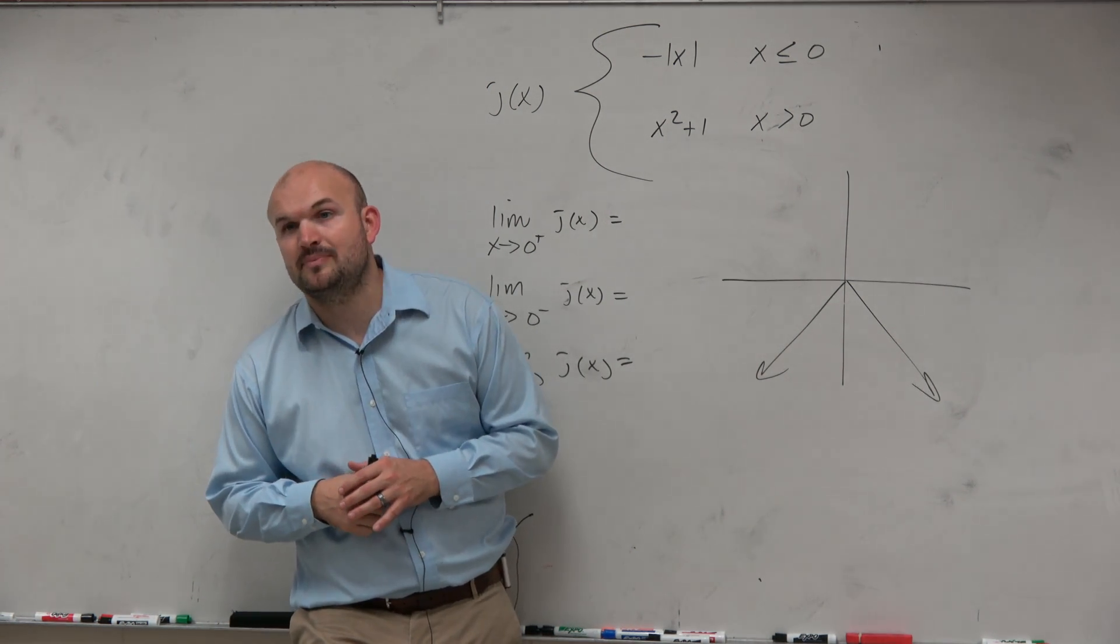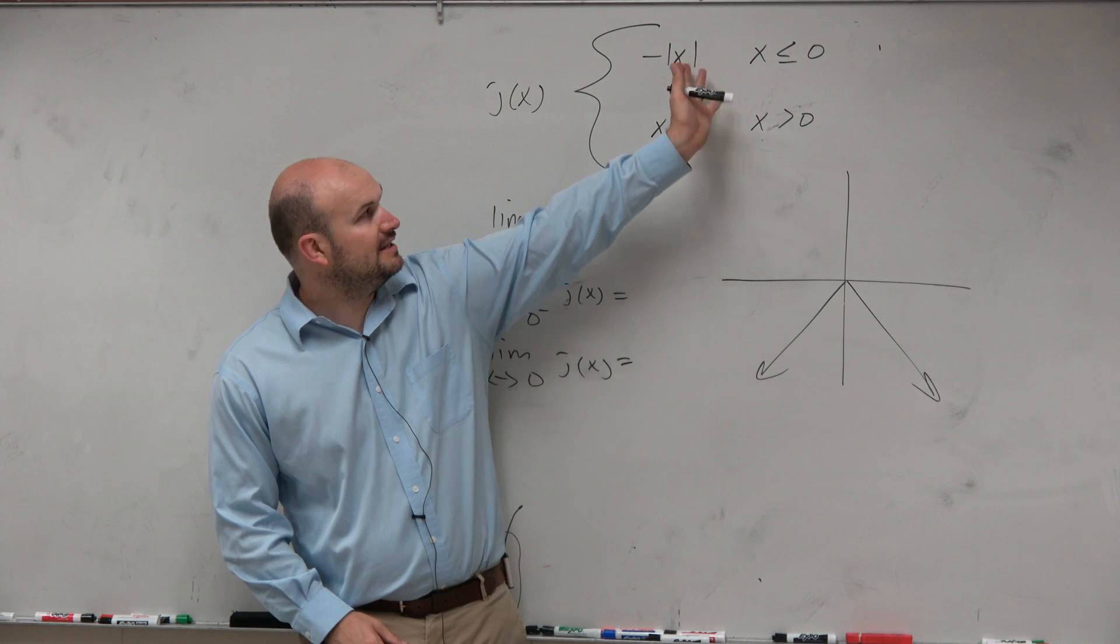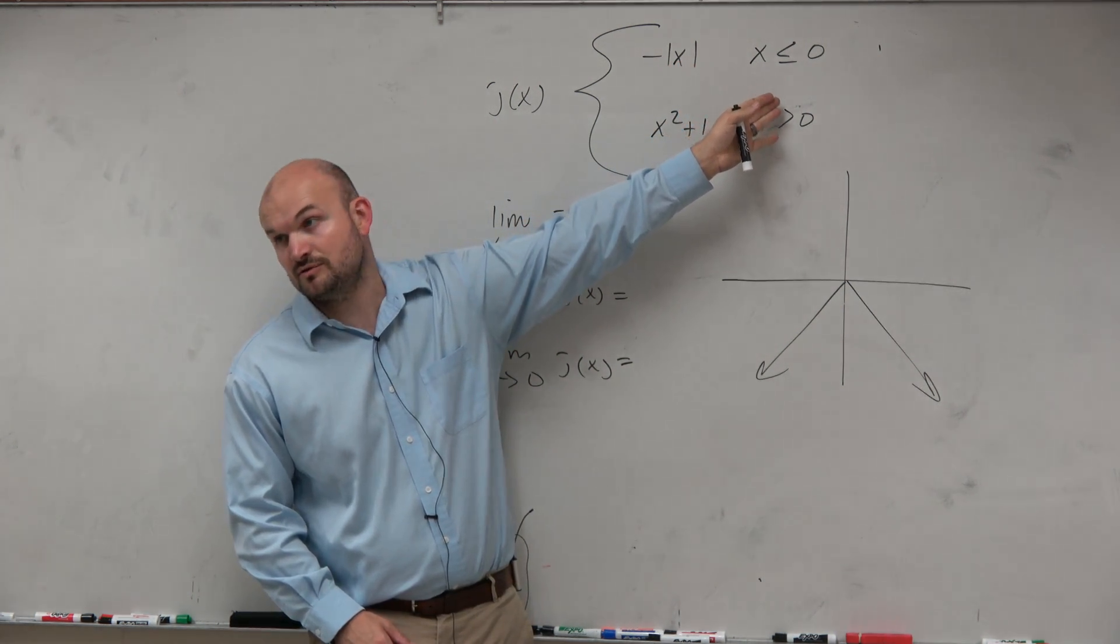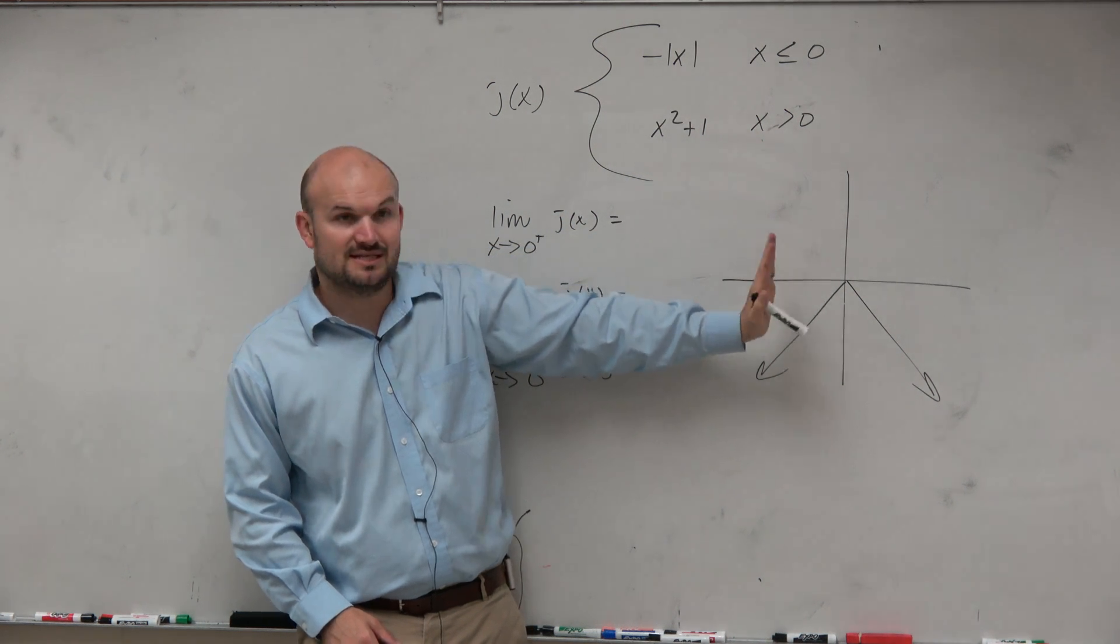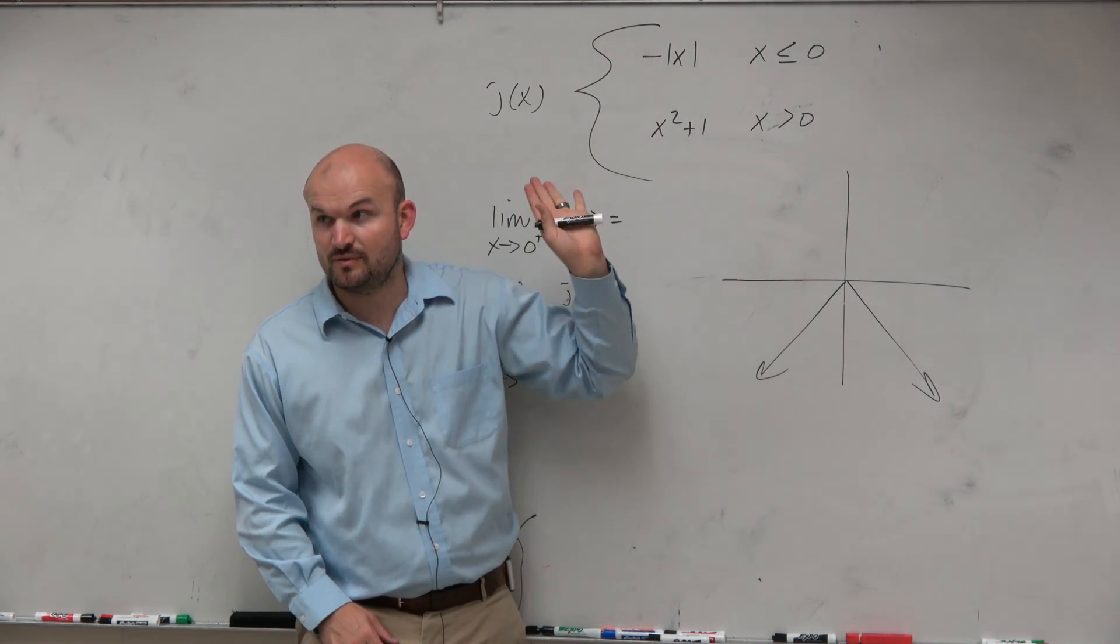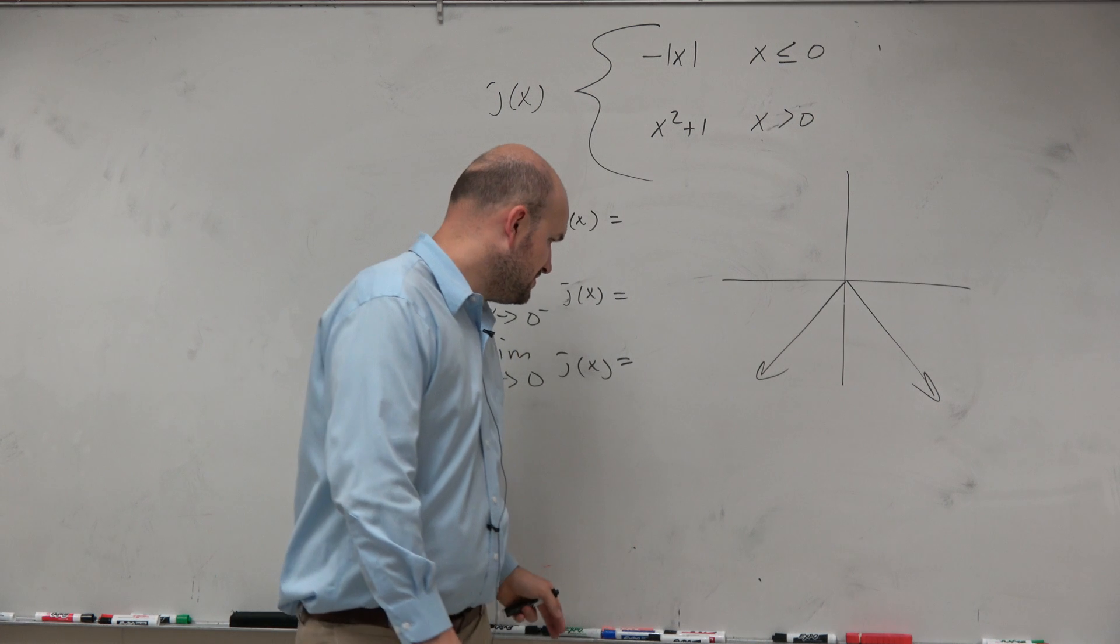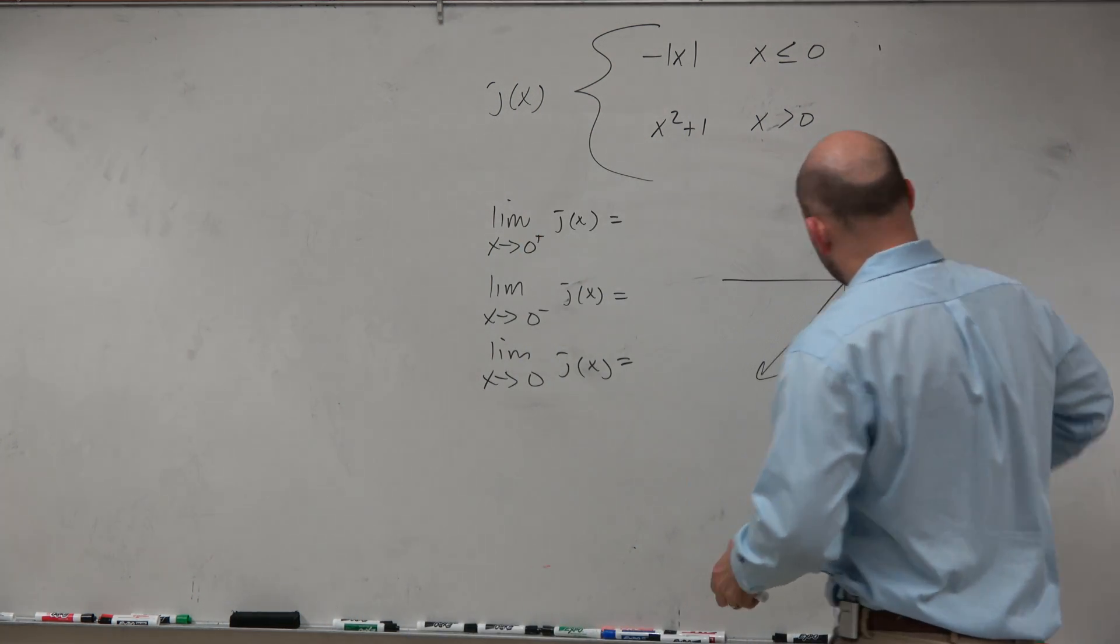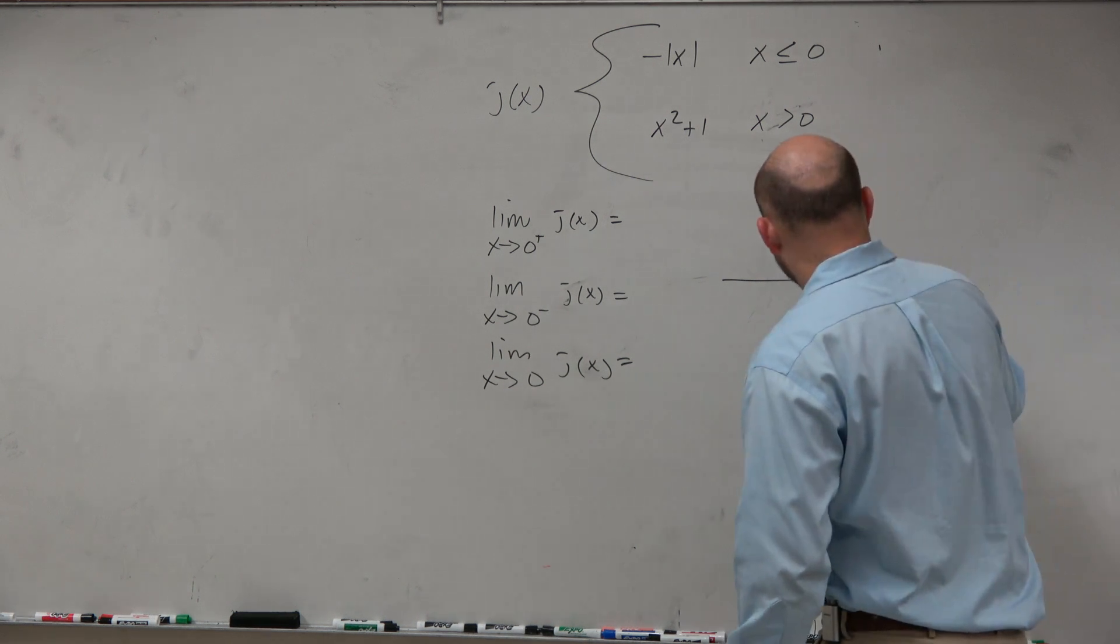Now, on top of that, it's saying that we only want to deal with this graph when x is less than or equal to 0. So x is less than or equal to 0, basically everything left of the y-axis, correct? So that means everything to the right of the y-axis is not going to be included as far as my graph. 0 is included.